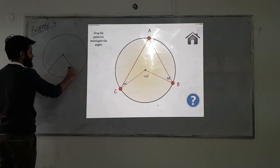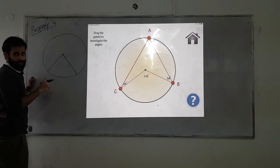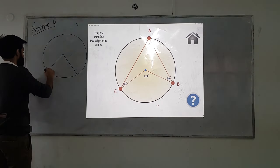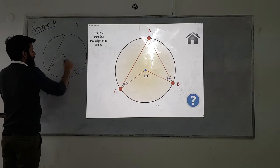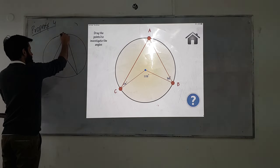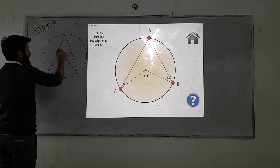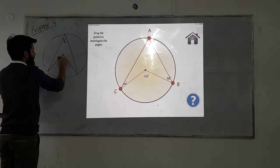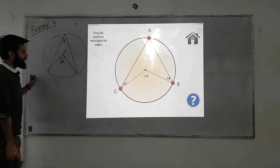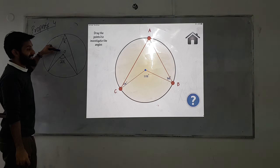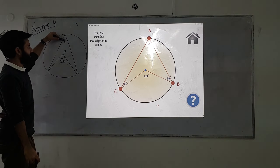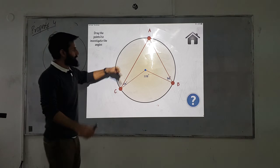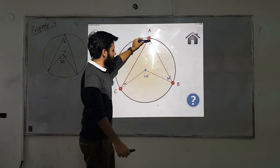So here's property number four. This property states that the angle at the center is twice the angle at the circumference. The angle at the center is twice the angle at the circumference.